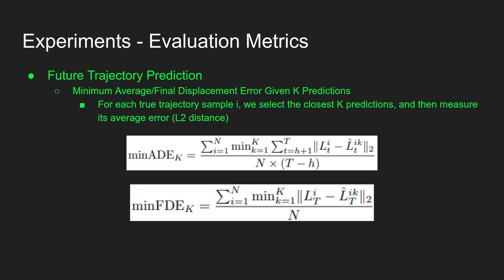For experiments, the evaluation metric is as follows. We utilize the metric minimum average displacement error given K predictions. This is a common metric used in the literature. For each true trajectory sample I, we select the closest K predictions and then measure its average displacement error as well as final displacement error.